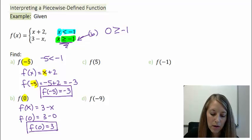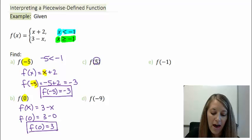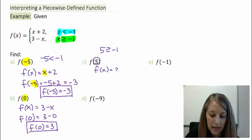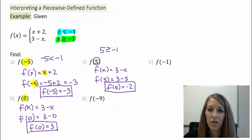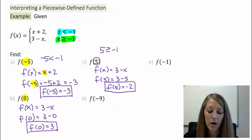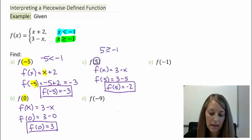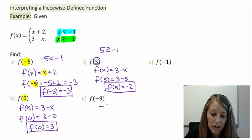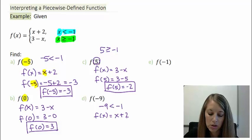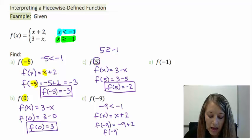For part C, f of 5: since 5 is greater than or equal to negative 1, I use the second piece, 3 minus x. So f of 5 equals 3 minus 5, which equals negative 2. Now is a good time to pause and try parts D and E on your own. For part D, f of negative 9: since negative 9 is less than negative 1, I use the first piece. So f of negative 9 equals negative 9 plus 2, which equals negative 7.